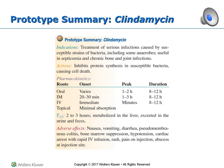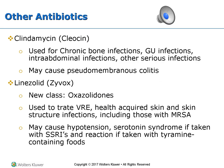Clindamycin, also known as Cleocin, is a lincosamide similar to macrolides but more toxic. It is used to treat severe infections when a less toxic antibiotic cannot be used, and is rapidly absorbed in the GI tract. It is used for chronic bone infections, GU infections, and intra-abdominal infections.